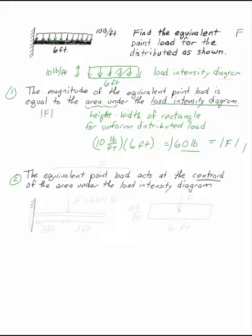The centroid of a rectangle, the equivalent point load, this is F, acts at the centroid of the area. So, here's my beam. It's not the centroid of the beam I'm looking for. It's the centroid of this load intensity diagram. That's where F acts.